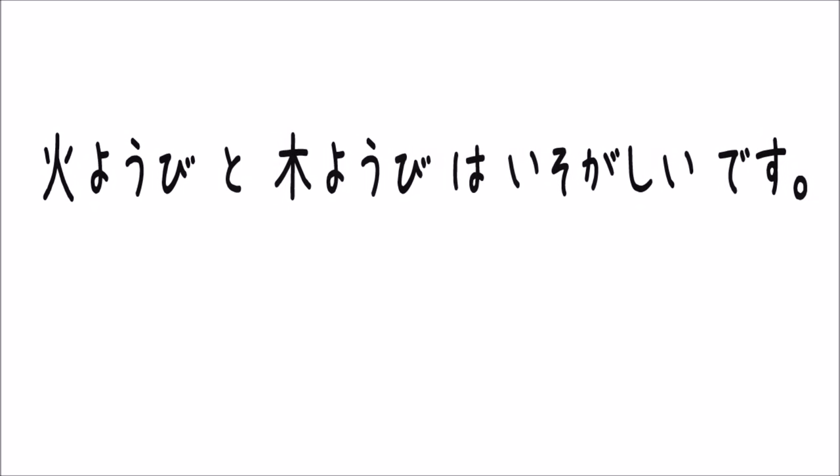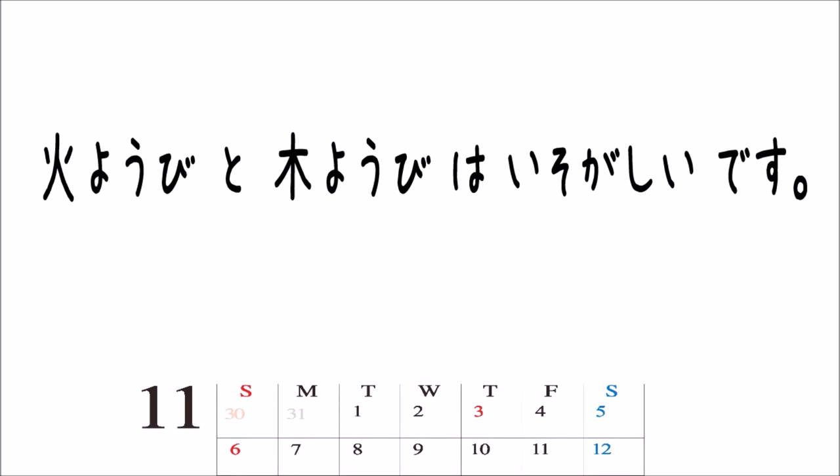Next. A kanji and then it says yobi. Remember, yobi is the suffix for the days of the week, right? Though we haven't learned the kanji for yobi yet, we will learn how to write it in this video. So this would be a compound noun. The first kanji means fire and fire plus yobi makes Tuesday. Do you remember how we say Tuesday? It's kayoubi.